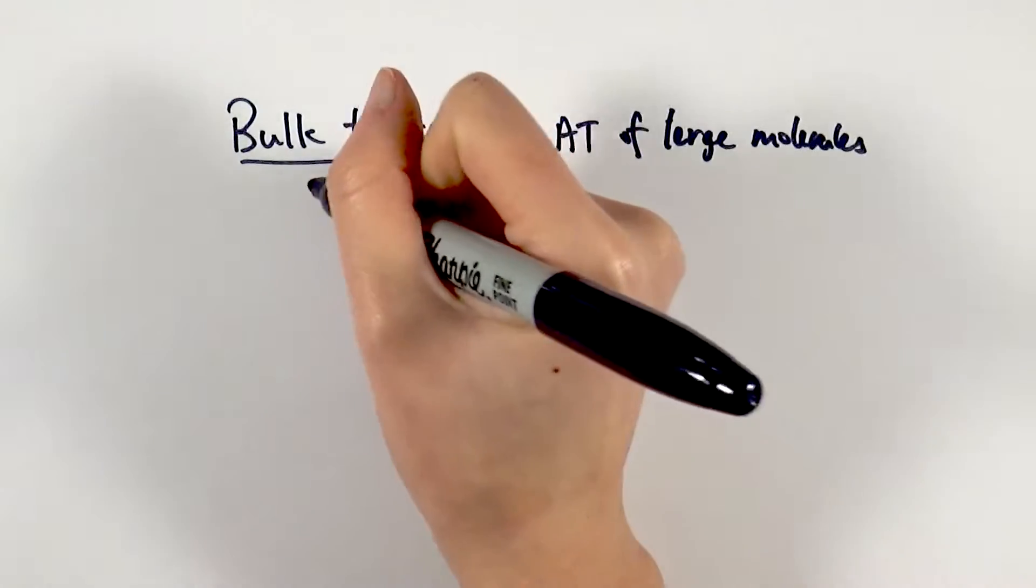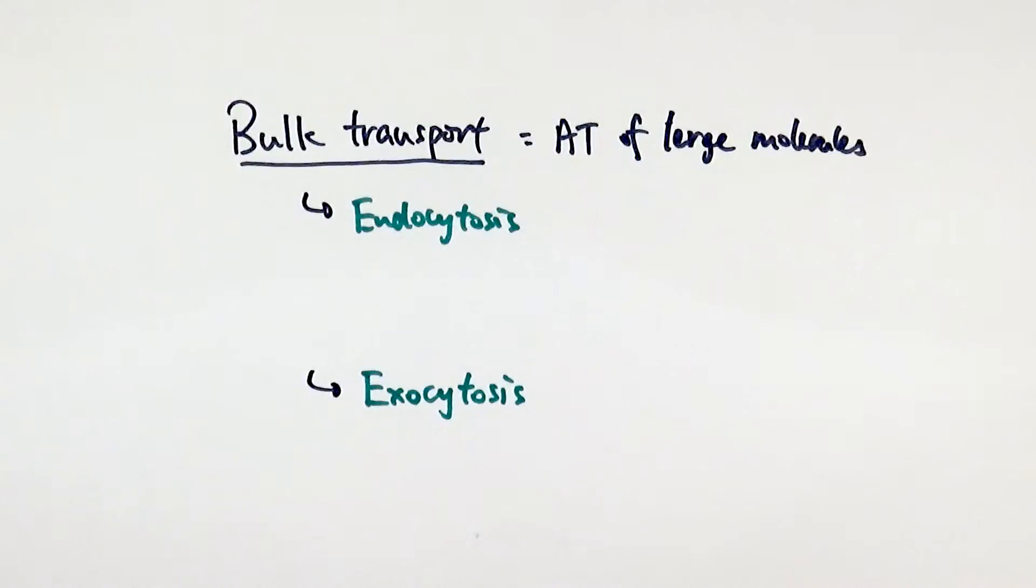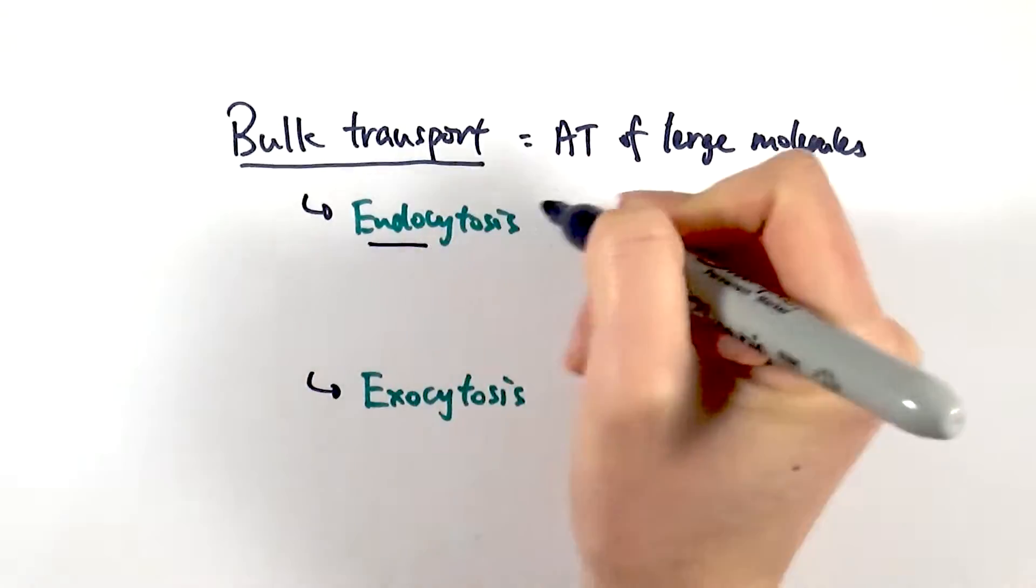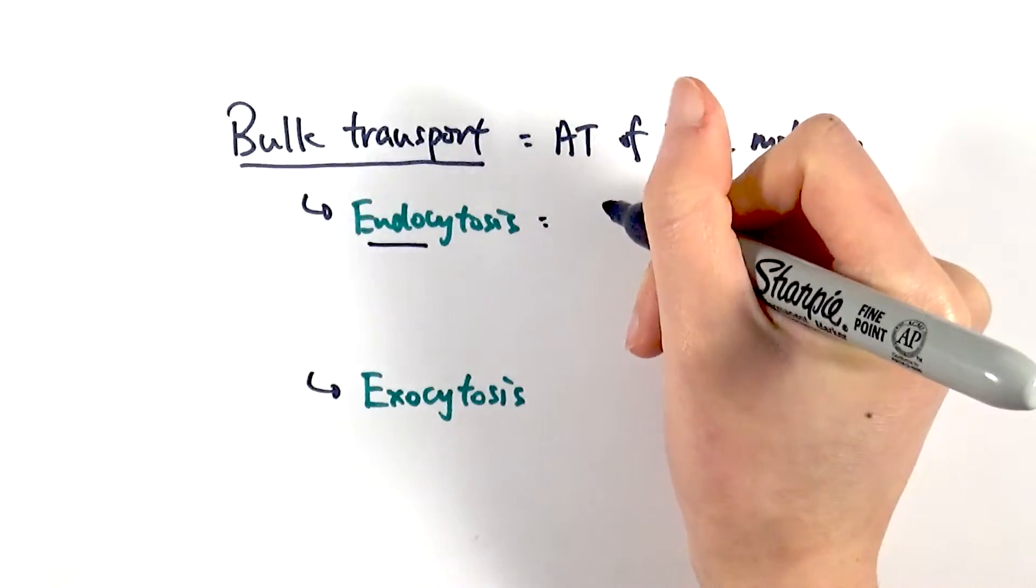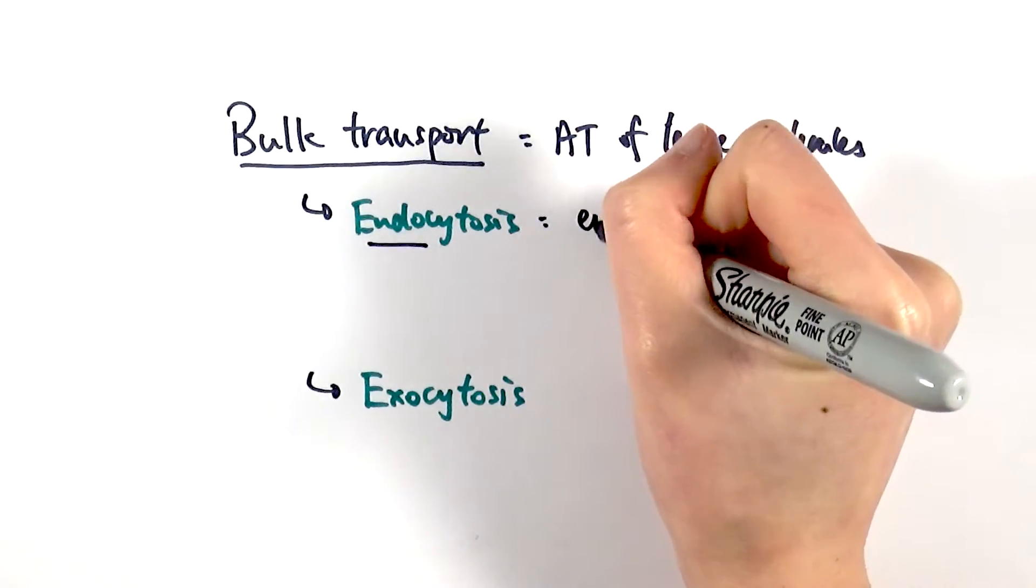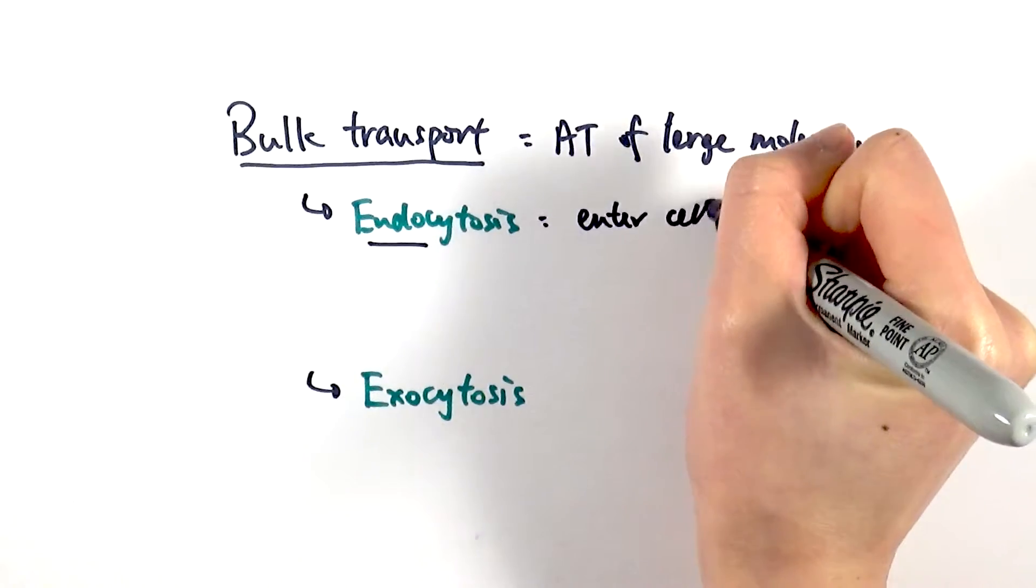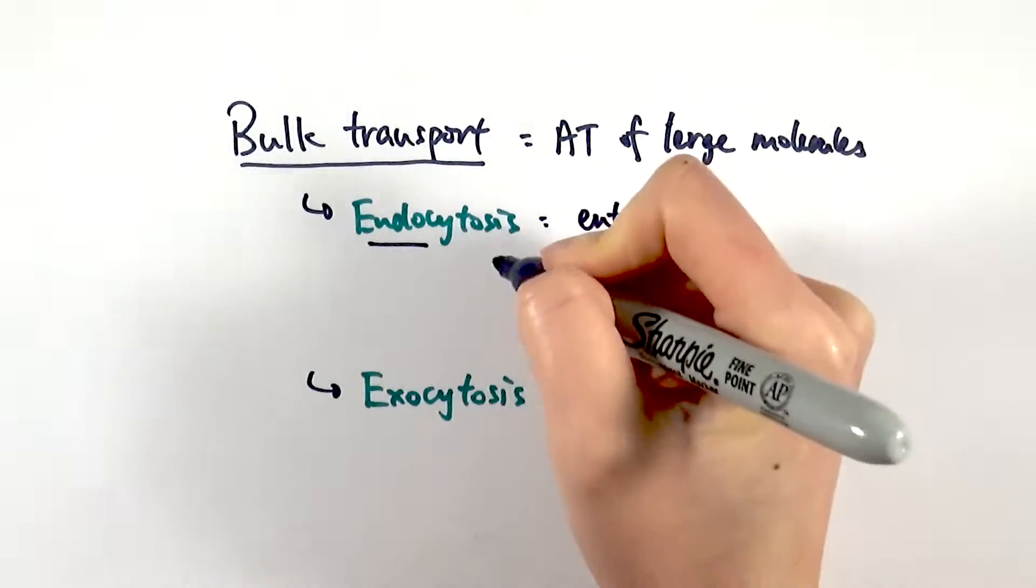And there are mainly two types of bulk transport: endo and exocytosis. Endo refers to anything that you want to move into the cell, so it's entering the cell. So some of the classic examples would be phagocytosis.